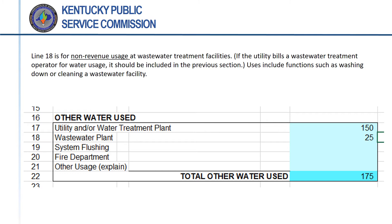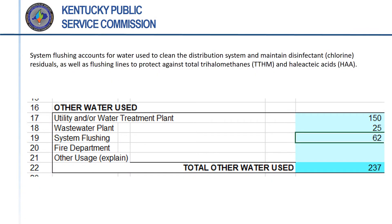If the utility charges a wastewater facility for any portion of its water usage or all water use, that quantity of water should be entered on the appropriate line in the previous section. Water used to flush a water utility system is entered on line 19. This is distinct from water used to flush portions of the water treatment plant. Water used to clean the distribution lines, maintain chlorine residuals, or reduce levels of trihalomethanes or heliocetic acids falls under this category of non-revenue usage.